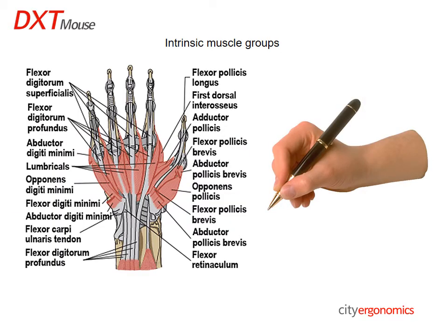The precision grip uses intrinsic muscles of the hand, which are entirely located within the hand itself. They are responsible for the fine motor functions of the hand, during which little power is produced. A good example of a precision grip is when you position a key into a lock using the intrinsic muscles with little power.